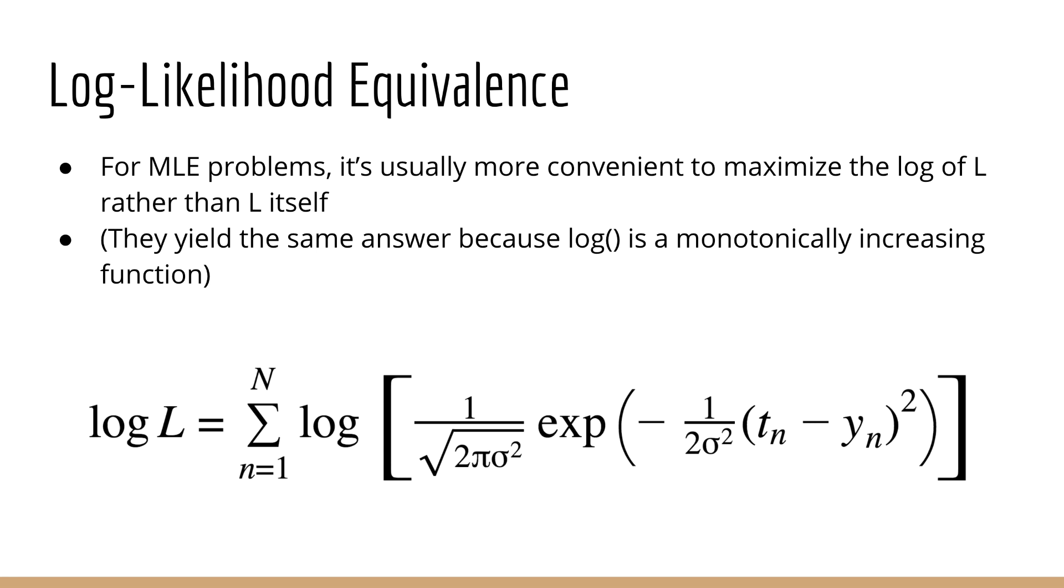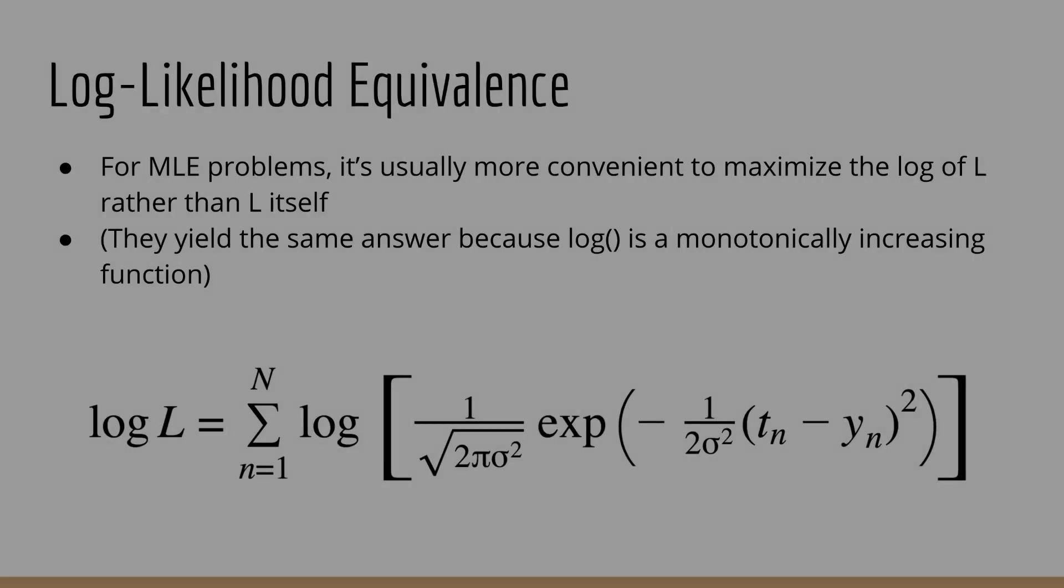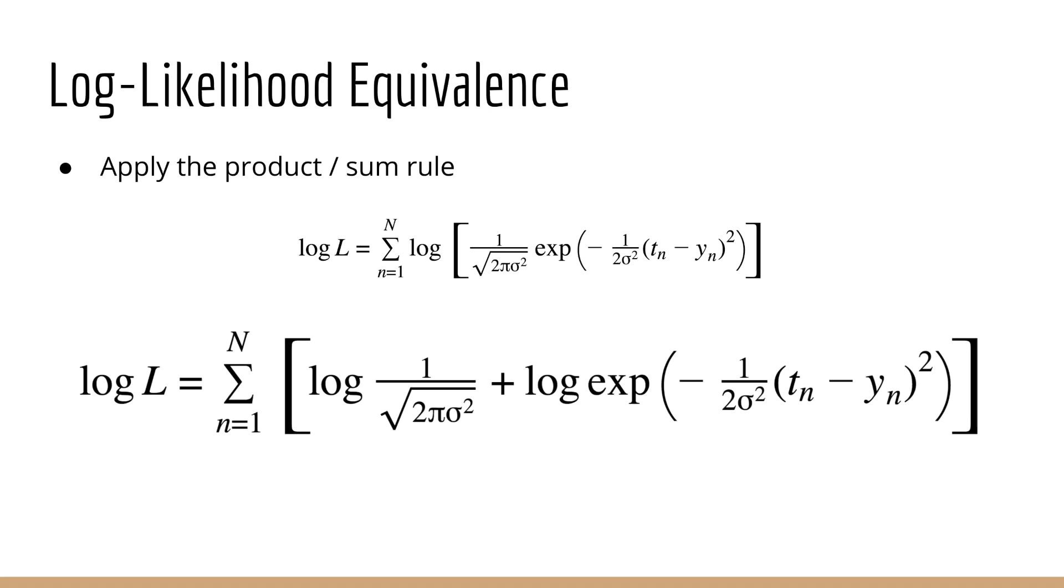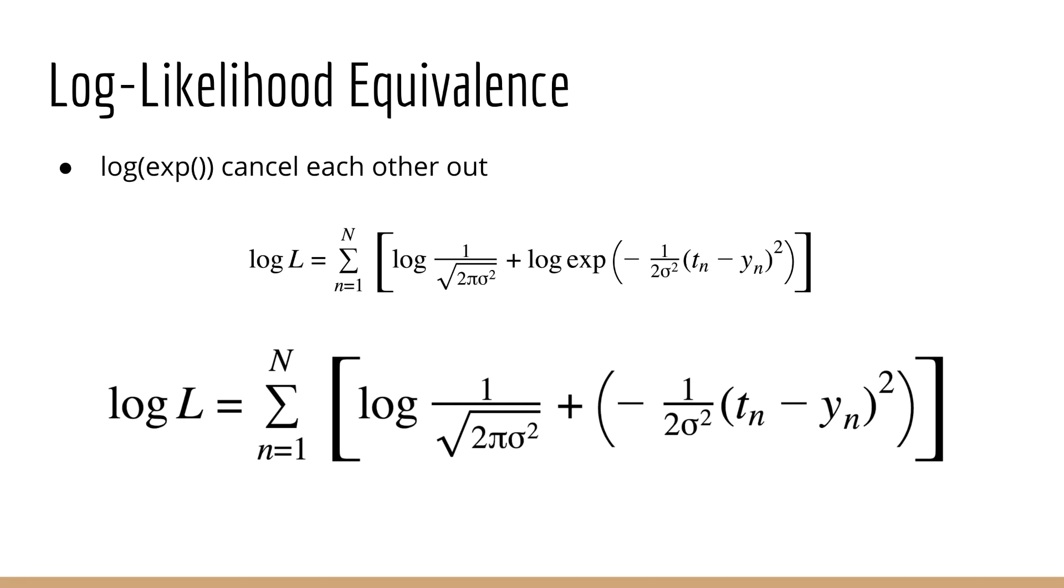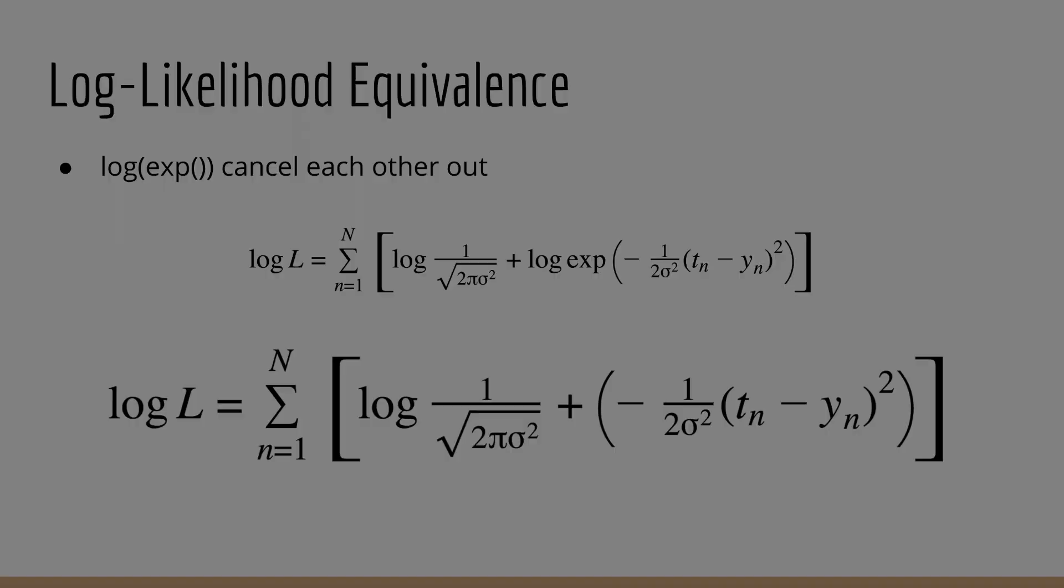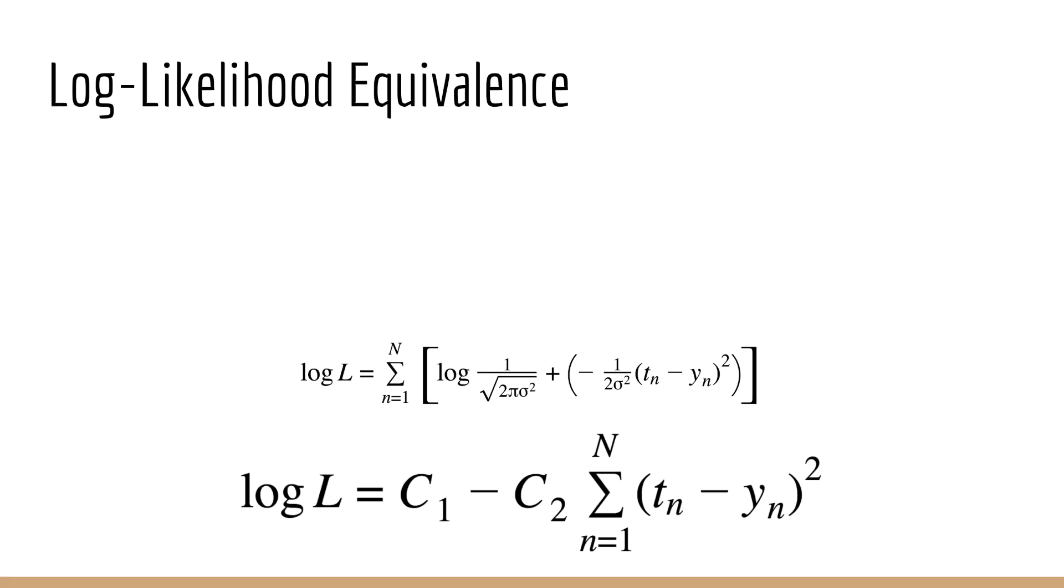The first step is to apply the log to each term individually. Since the log and the exponential are the inverse function of each other, they cancel each other out. What we're left with is essentially a function that looks like this, where c means constant.